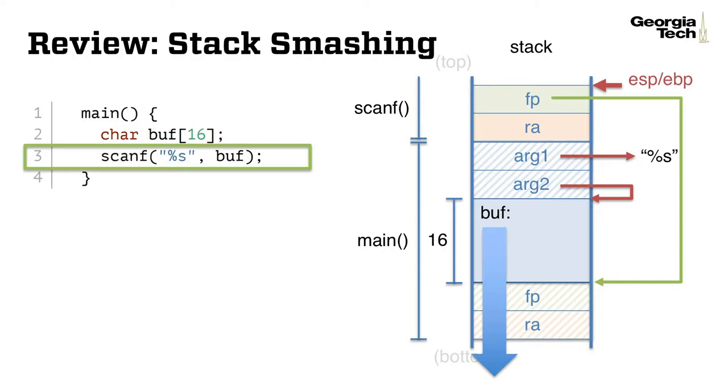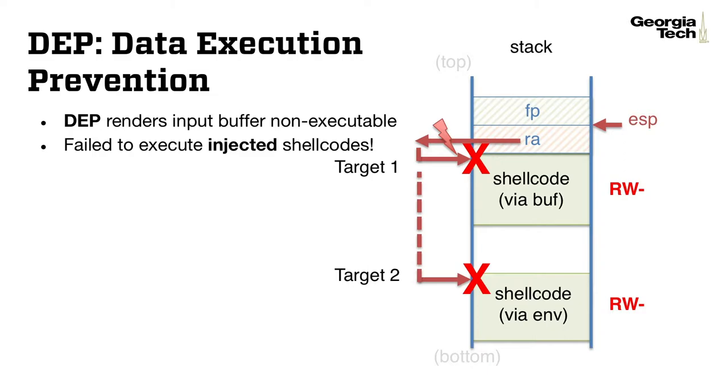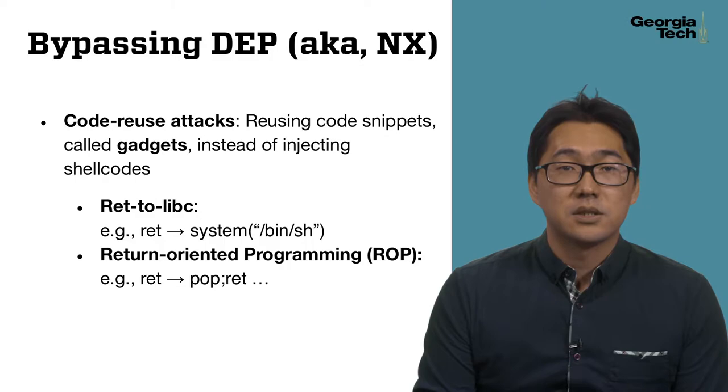This is a simple stack overflow vulnerability that we discussed in previous labs. To exploit this vulnerability, an attacker can simply provide a longer input than the allocated buffer. Typical targets for shellcode were the input buffer and the environment variables in previous labs. However, when DEP is applied, attackers cannot directly execute the injected code, since all writable memory regions are not executable anymore.